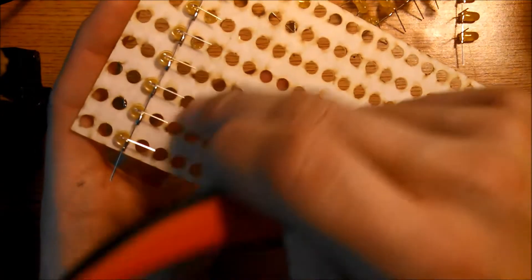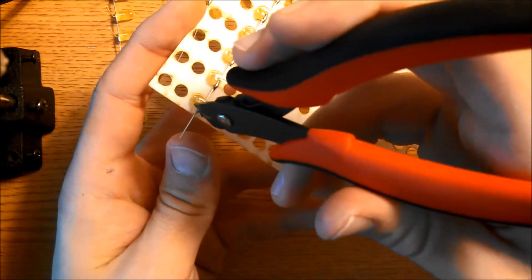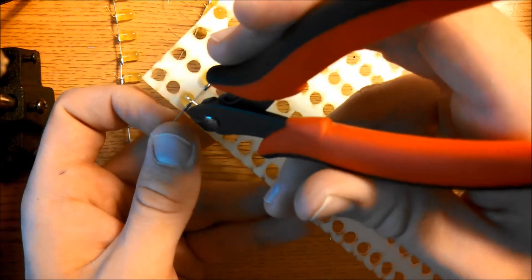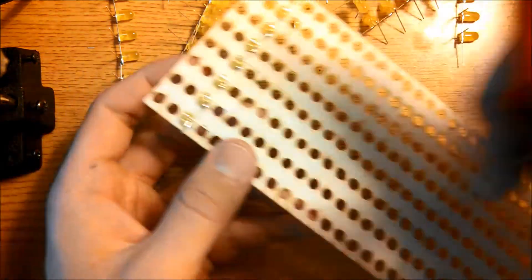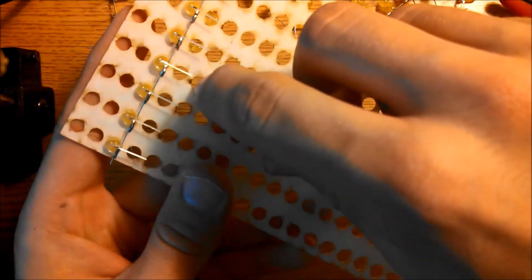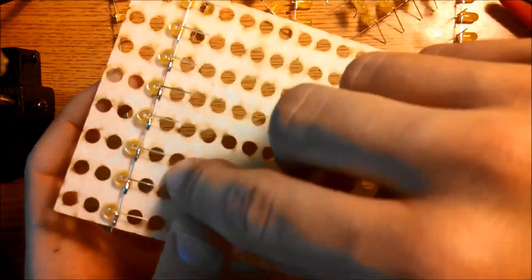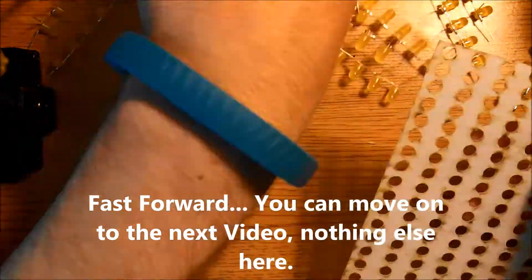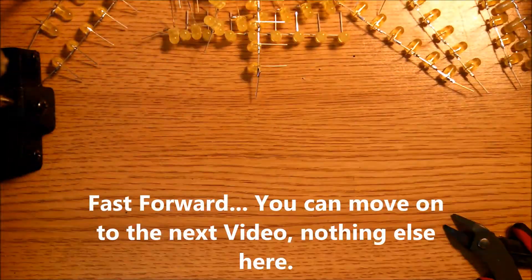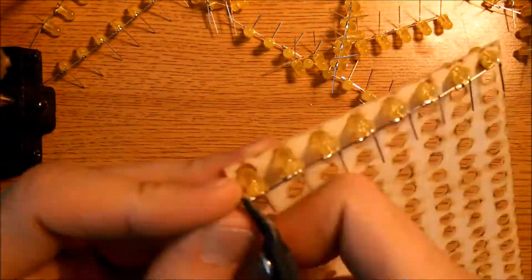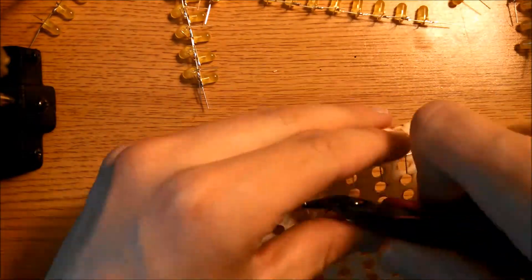Once you've trimmed this side, go ahead and trim off almost all of the lead here. You have something like this where each one of these matches up perfectly with the circle.